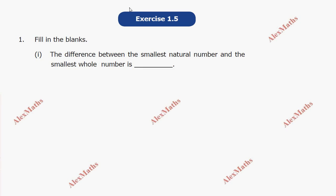Hi students, this is Alex. In this video where x is 1.5, we solve question number one: fill in the blanks. The difference between the smallest natural number and the smallest whole number. The smallest natural number is 1, the smallest whole number is 0. The difference is 1 minus 0, which equals 1.